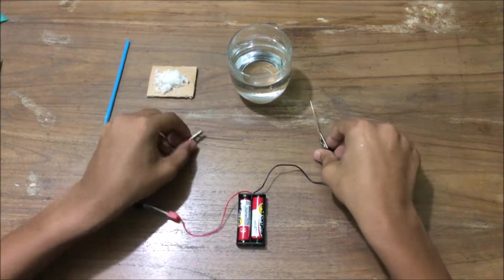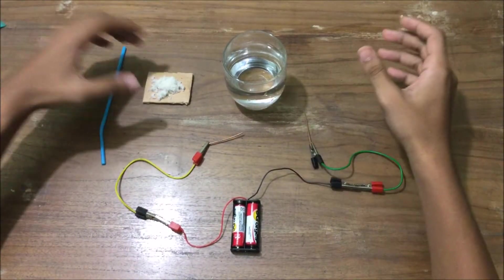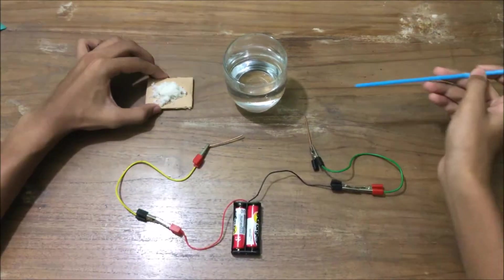Electrolysis is the name of a process through which different chemical substances can be separated and collected by passing an electric current through them.